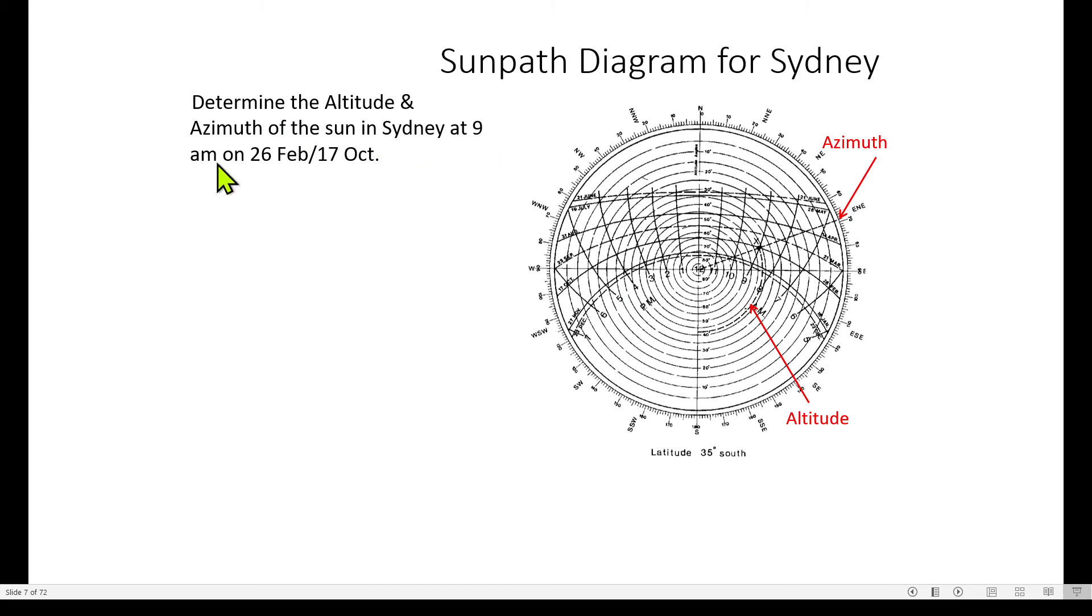I want to find the azimuth and altitude of the Sun in Sydney on 26 February or 17 October. So 26 February is here, and it's the same line as 17 October. Our azimuth and altitude for 26 February and 17 October are the same. I want to find it for 9 a.m., so 9 a.m. is here: 5 o'clock, 6 o'clock, 7 a.m., 8 a.m., 9 a.m., 10 a.m.